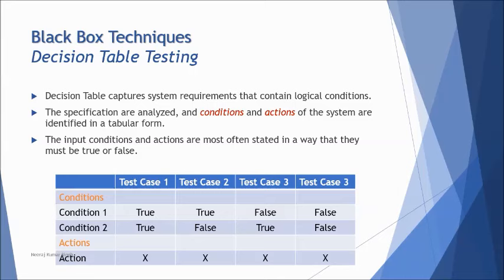Condition one is something, condition two is another thing added to the scenario. If both are true, something will happen. If one is true and one is false, there are different outcomes. If both are false, there's another outcome — and this is what you list as actions. It is evaluated as yes/no or true/false, and depending on the number of conditions you have, that determines the number of test cases being prepared.